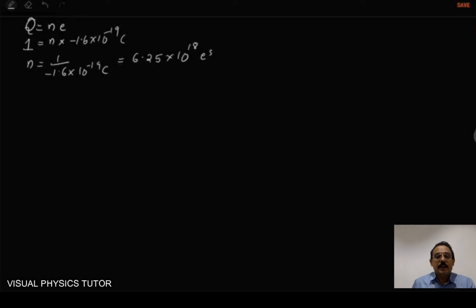Here the minus sign is neglected because we are just considering the magnitude, that is the number of electrons. And today we will deal with an important topic, that is Coulomb's law or Coulomb's inverse square law.